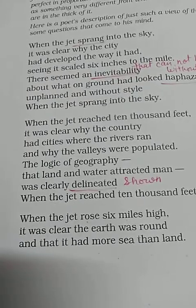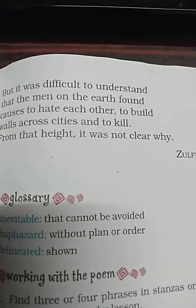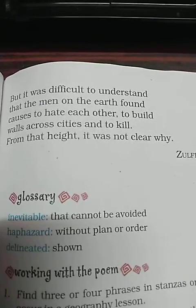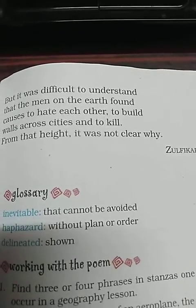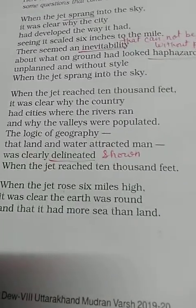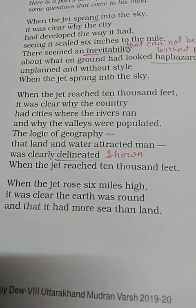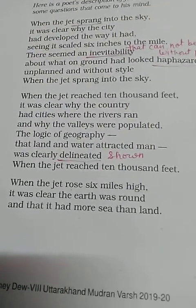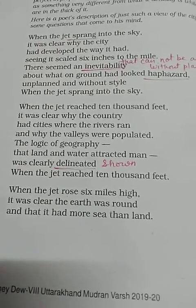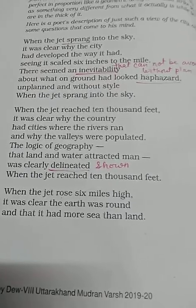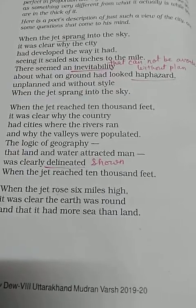In the third stanza, when the jet rose six miles high, it was clear that the earth was round and that it had more sea than land. But it was difficult to understand that men on the earth found causes to hate each other, to build walls across cities, and to kill. From that height, it was not clear why. The jet is now higher than before — above six miles — and the poet could understand that our earth has more water than land.